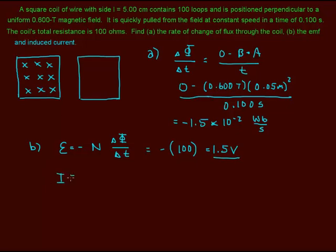Now, the current, going back to Ohm's Law, is voltage over resistance. So I have 1.5 volts divided by 100 ohms, and we have 0.015 amperes.